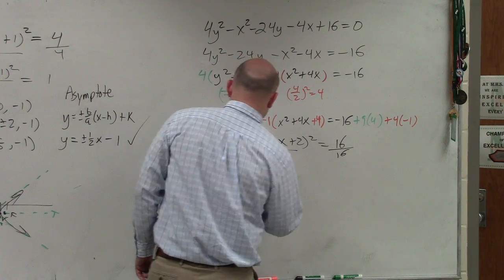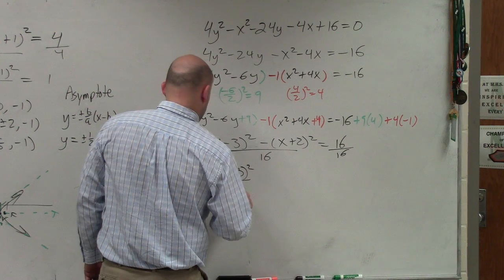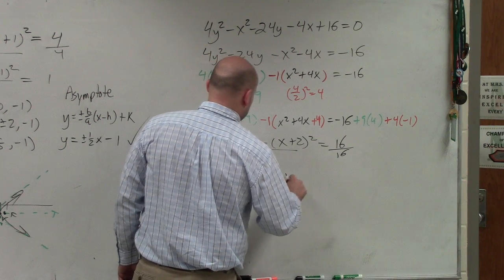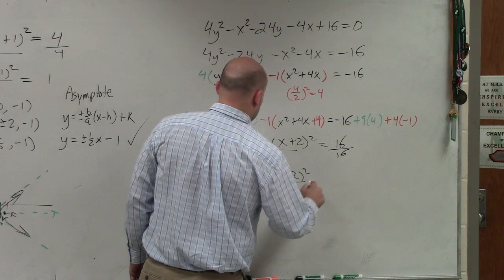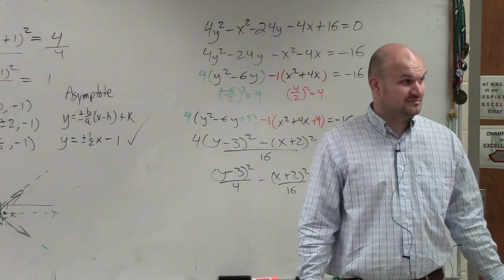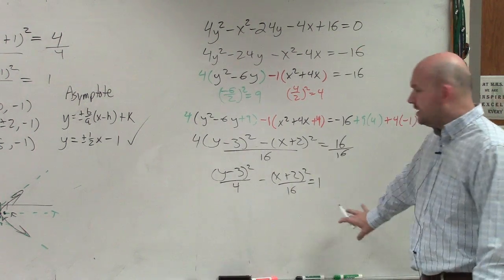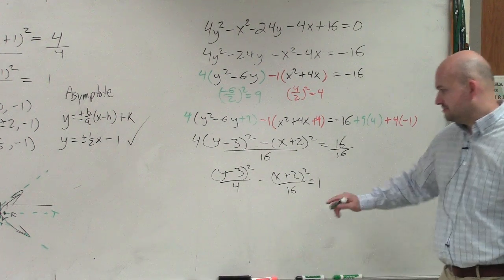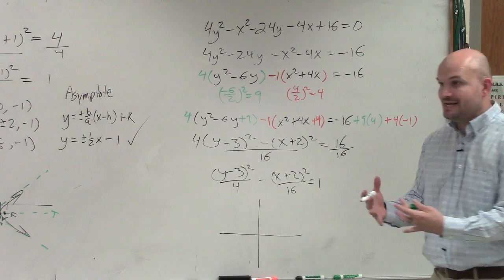So now you divide this all by 16 and you get (y - 3)² / 4 - (x + 2)² / 16 = 1. And I didn't even solve my problem. Didn't even do anything. All I did was complete the square. But I'll answer these fairly quickly because I'm just going to kind of do this in my head.